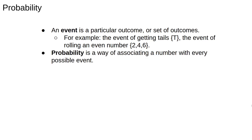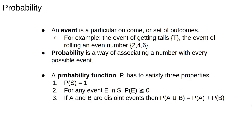Probability is a way of associating a number with every possible event. That is, it's a function mapping subsets from the sample space into numbers. So a probability function has to satisfy three properties. Formally, they are P(S) = 1. For any event E in S, P(E) ≥ 0. And finally...